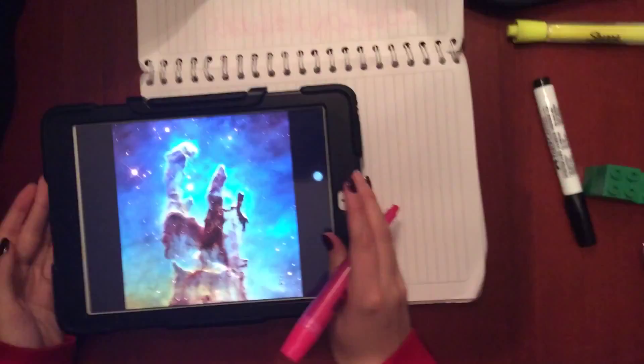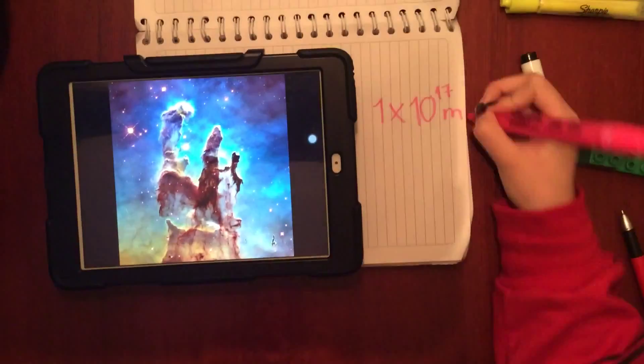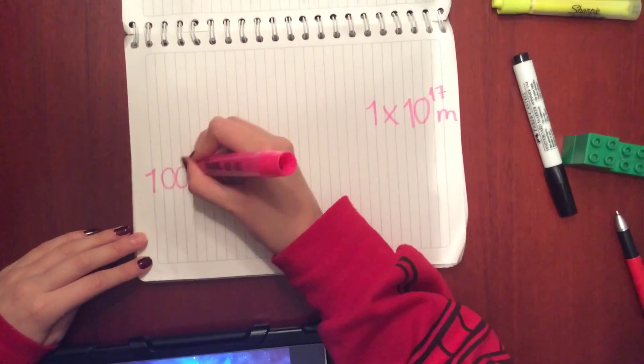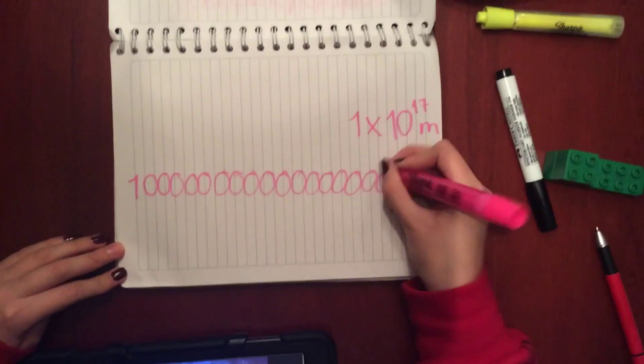Another example is the pillars of creation. They are 1 times 10 to the 17 meters big. It is much easier writing that than 1 and then 17 zeros.